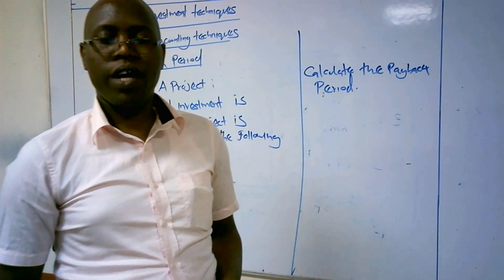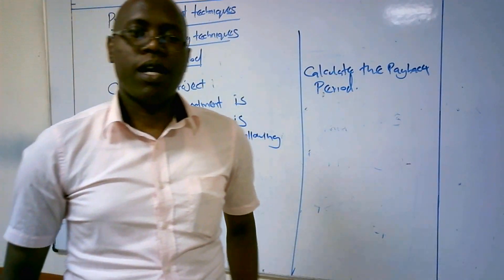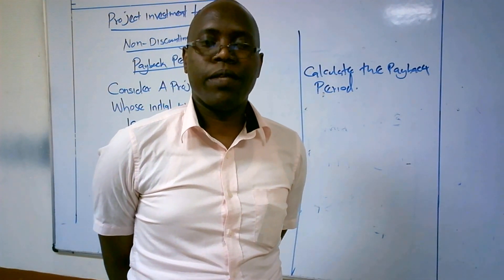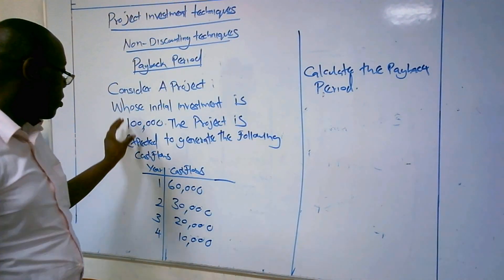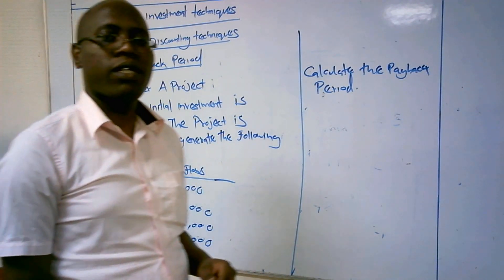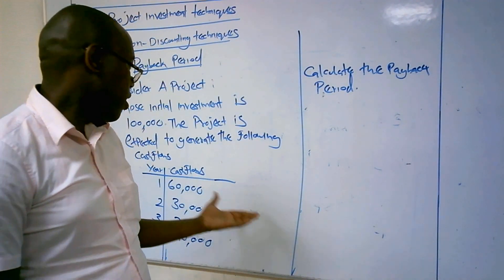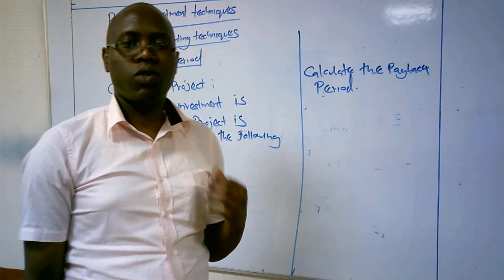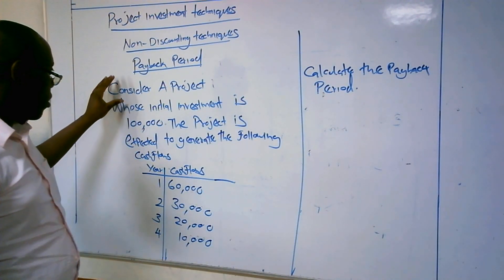Welcome once again to our class. We are still discussing non-discounting techniques, and again we are looking at the payback period. In this case, we want to see a payback period where you have an initial investment of $100,000, and when you prepare the accumulated cash flows, you cannot see that $100,000 in any of them. So how can you deal with a situation like that?